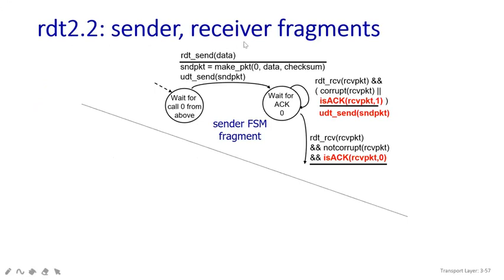Now we will see how RDT 2.2 works in the sender and receiver fragments. You can see it is waiting for 'call 0 from above', and it has to wait for 'acknowledgement 0'. This is the sender FSM fragment. The code is the same — rdt_send(data), send_packet = make_pkt(0, data, checksum), then it waits for the acknowledgement. If corrupted data is present, it asks: is the acknowledgement received for sequence number 1? If we have already moved to the second stage, it sends the packet back. If the packet is not corrupt and the next sequence number is acknowledged, it receives the next packet.